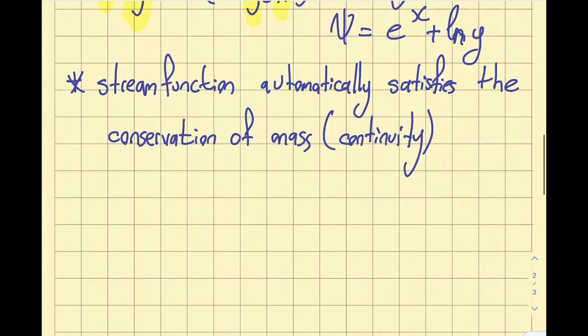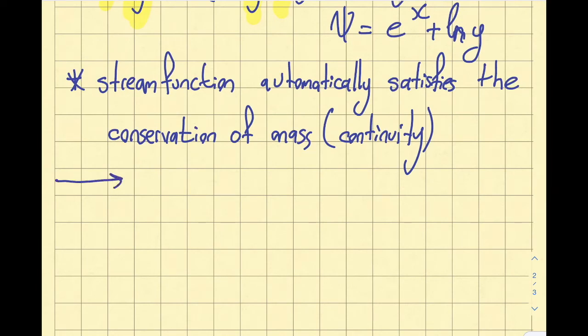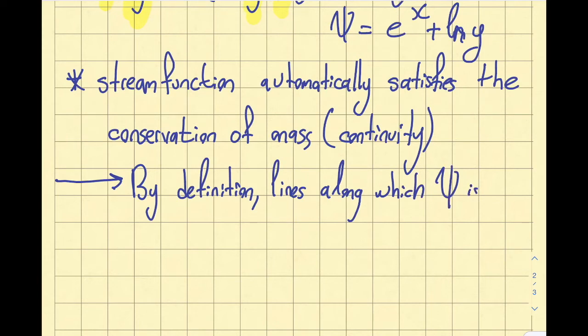Stream function automatically satisfies the conservation of mass, or also, this equation is known as continuity. Stream function automatically satisfies conservation of mass or continuity, very important. Now, in the previous modules we have covered something called the streamline. If you think about it, the name stream function and streamline, there is this common word stream in between both of them. So at this point in time, what I want to do is relate those two concepts.